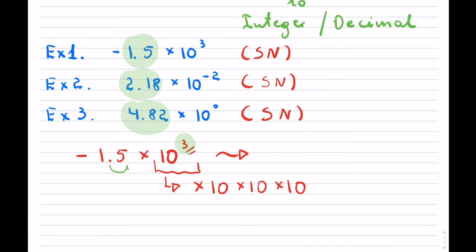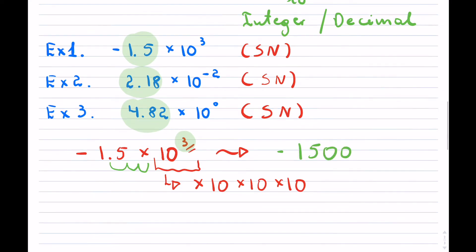So if you shift the decimal by three multiplications of power of 10, then this number is going to become an integer, as you can see. So we shifted the decimal over three times. So it's 1,500 and it's negative. So that's the first example.